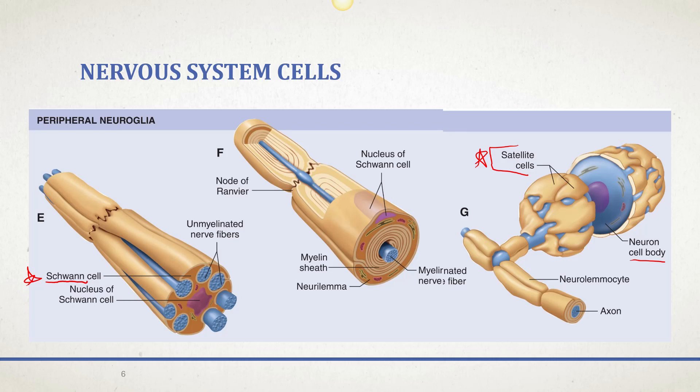Now, why are these so important? You have one neuron that spans from your spinal cord all the way to the tip of your toe — that's super long for one cell. That cell can get damaged at any place along its length and regenerate. But if the cell body is damaged, that entire neuron is dead. So we have these special satellite cells that surround the cell bodies of peripheral neurons, making sure they are insulated and extra protected.